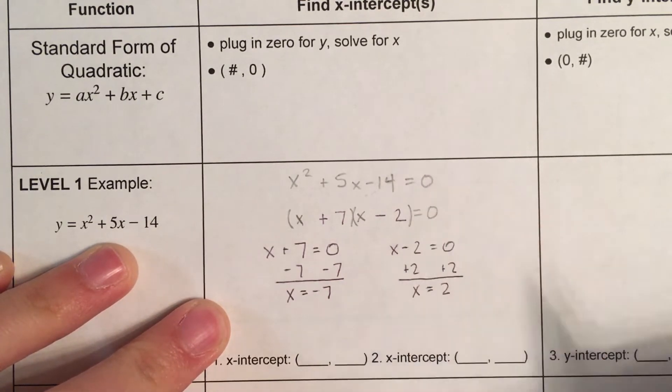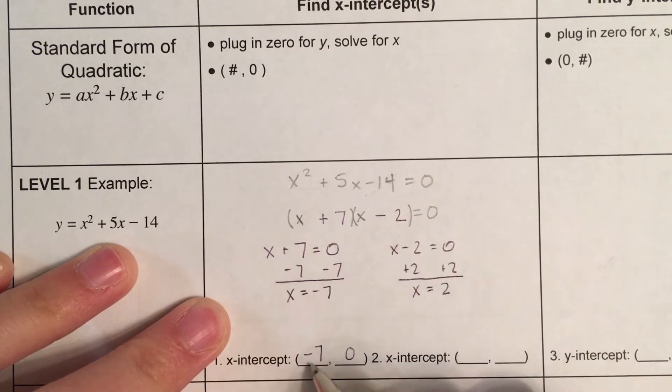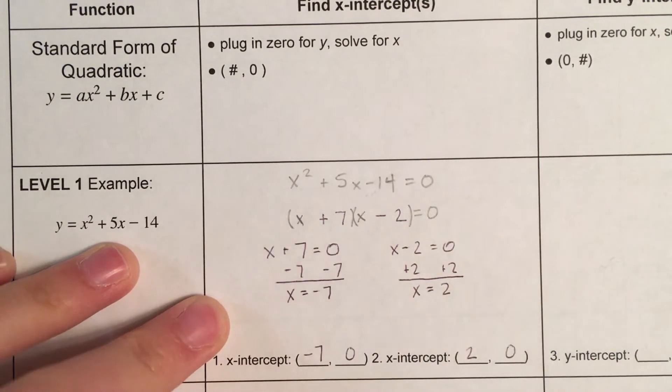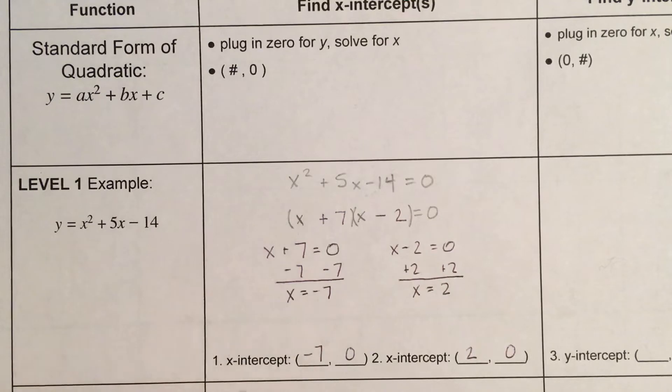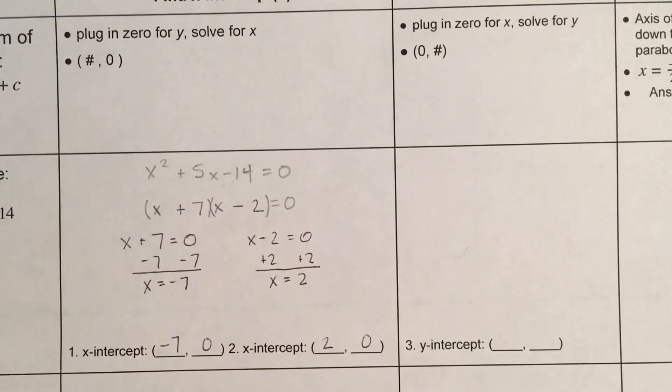Now, remember, in both cases, I've plugged in 0 for y. So, this is negative 7, 0. x is negative 7 when y is 0, or x is 2 when y is 0. And I'm just going to fill in these blanks along the bottom, and that's going to help me with my graph at the end.